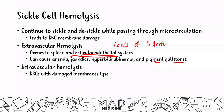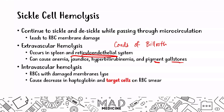Intravascular hemolysis also occurs because the RBC membrane becomes damaged and the cell is lysed due to over-sickling. This releases hemoglobin into circulation, leading to a decrease in haptoglobin — recall that haptoglobin binds to free circulating hemoglobin. You will also see target cells on the RBC smear.